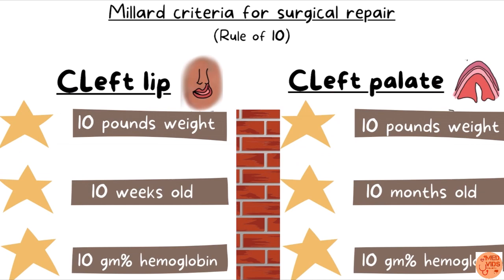There is a criteria for surgical repair called the Millard criteria, also known as the Rule of 10. For cleft lip, the child should be a minimum of 10 pounds in weight, minimum 10 weeks old, and hemoglobin should be 10 gram percent. For cleft palate, the weight and hemoglobin criteria are the same, but the age limit is a minimum of 10 months old. This is the minimum criteria which must be met before surgery can be done.